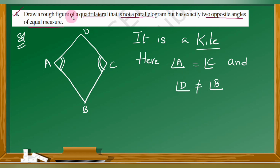For example, let us take a kite ABCD. In a kite, only one pair of opposite angles are equal — angle A is equal to angle C, but angle B is not equal to angle D. So a kite has exactly two opposite angles of equal measure, but it is not a parallelogram since the other pair of opposite angles are not equal.